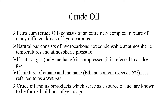Crude oil and its byproducts, which serve as a source of fuel, are known to have formed millions of years ago. Crude oil is refined into several products. The first and purest form is aviation spirit, used for running aeroplanes. The second is petrol, utilized for running automobiles. The third is diesel, also used for running automobiles. After refining, what remains is kerosene, available for general usage, and whatever remains after that is called wax, from which we make candles and different products.